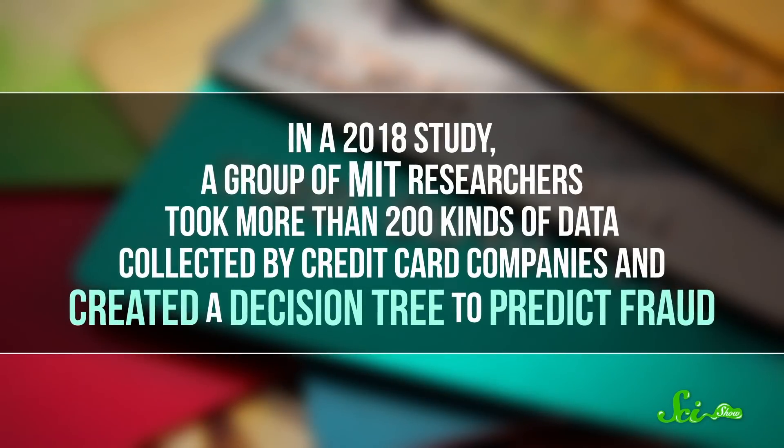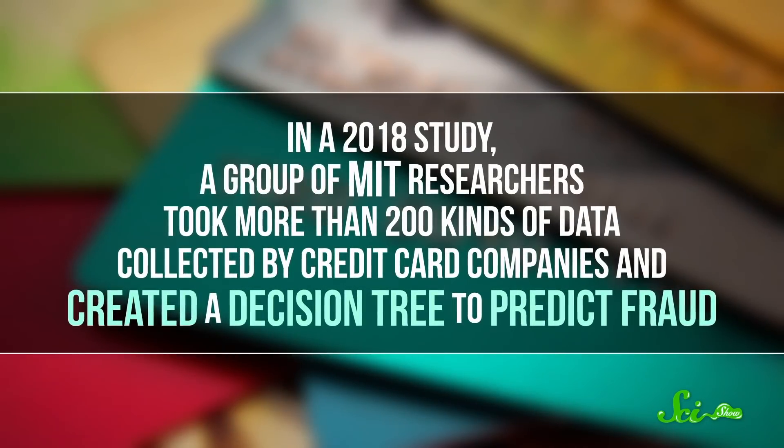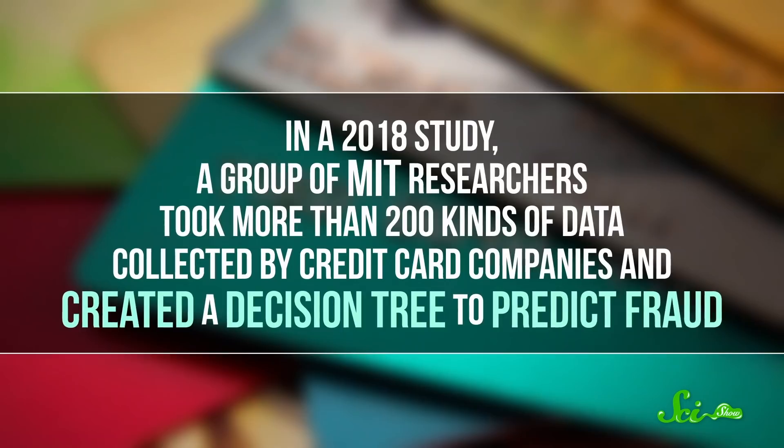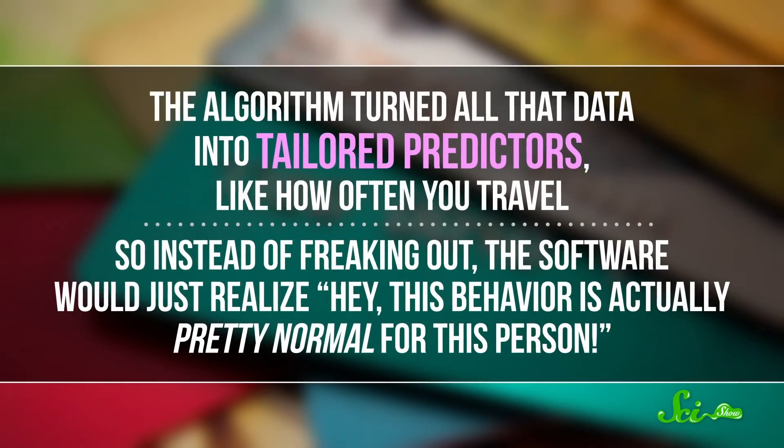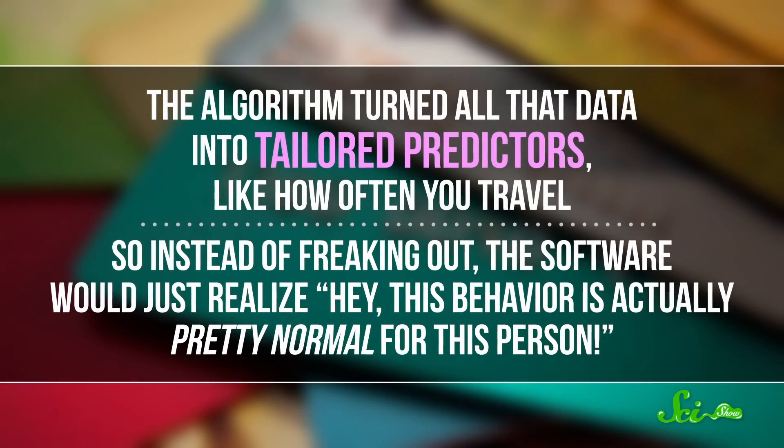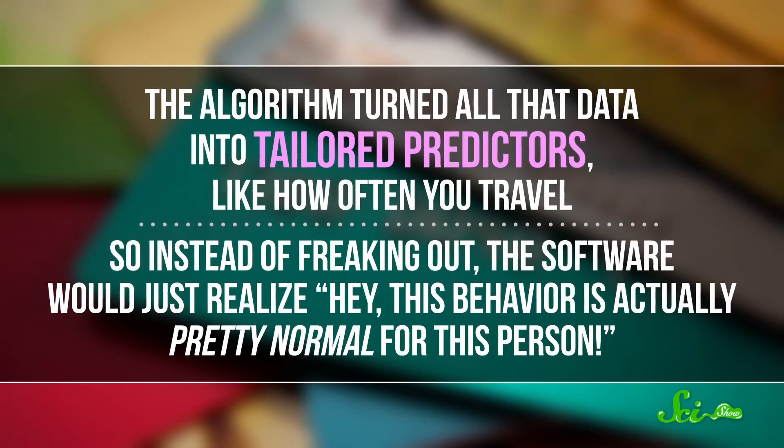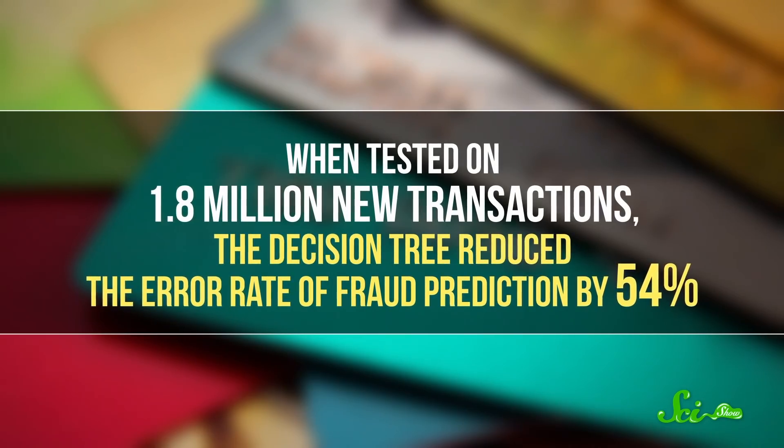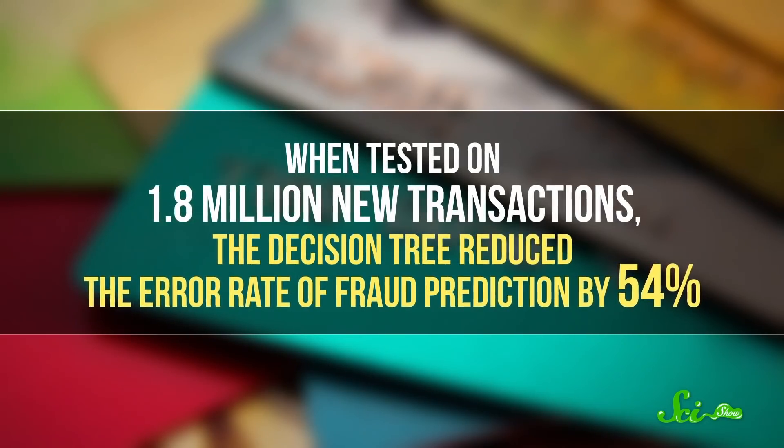So in a 2018 study, a group of MIT researchers took more than 200 kinds of data collected by credit card companies and created a decision tree to predict fraud. The algorithm turned all that data into tailored predictors, like how often you travel. So, instead of freaking out, the software would just realize, hey, this behavior is actually pretty normal for this person. When tested on 1.8 million new transactions, the decision tree reduced the error rate of fraud prediction by 54%. And as these techniques are integrated on a wider scale, that will mean less fraud for banks to deal with, and fewer mysterious problems for the rest of us.